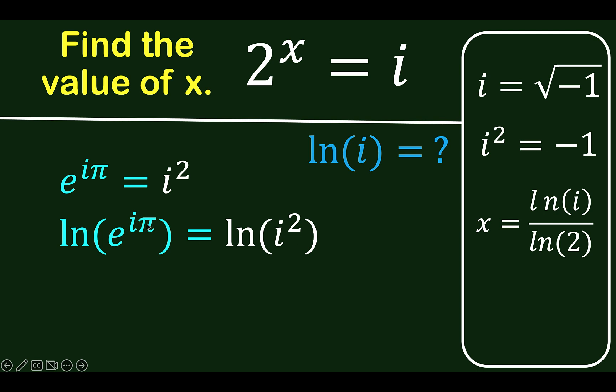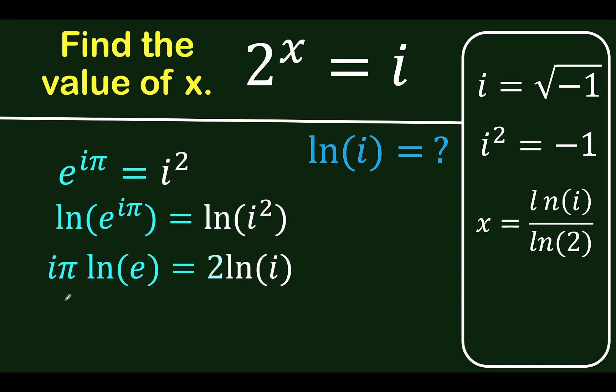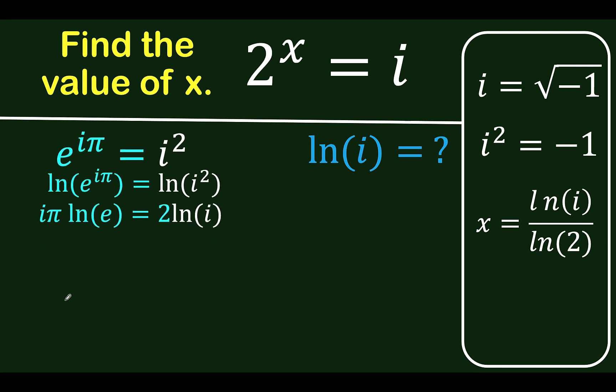Again, using the property of logarithm, we can put this exponent at the front for both the left and right side. But we know that ln of e equals 1, so the left side is only iπ, and therefore we now have iπ equals 2 ln of i.